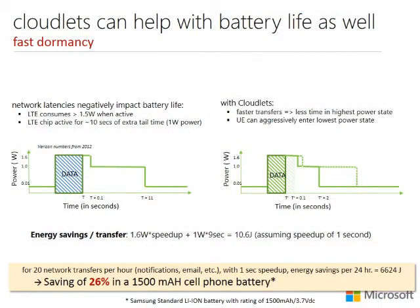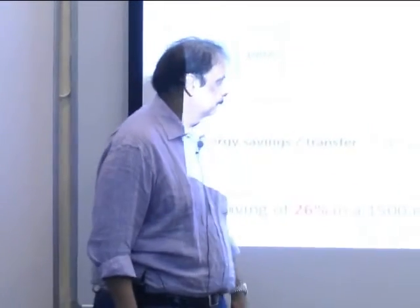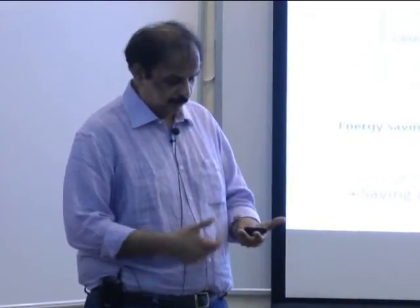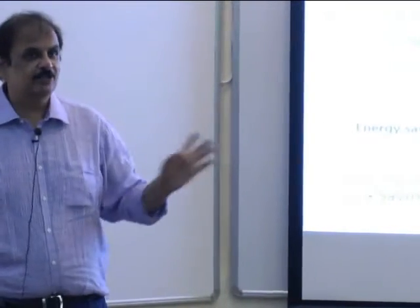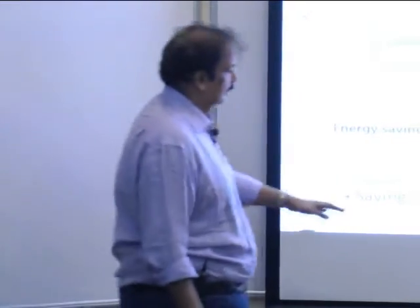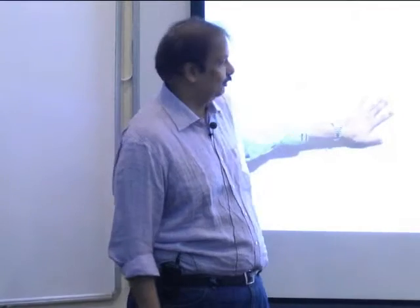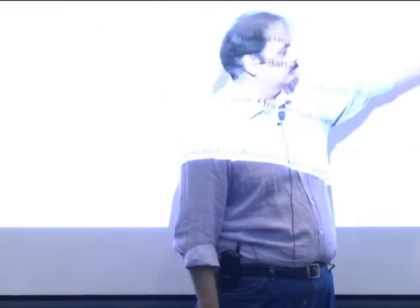If you take a regular phone like a Samsung phone and apply this, with 20 network transfers per hour — notifications, emails, et cetera — which is not too much for how most people use their phones, you can save 26% of the battery. If you work in battery research, you know that's a huge number. People have been struggling for ages to improve battery life. Drawing it out: on the horizontal axis is the number of network transfers per hour, on the vertical axis is battery saved. You can save up to 75% of your battery lifetime, depending on how many transactions you do.